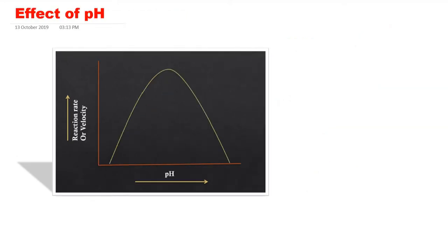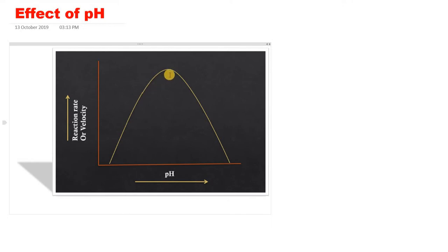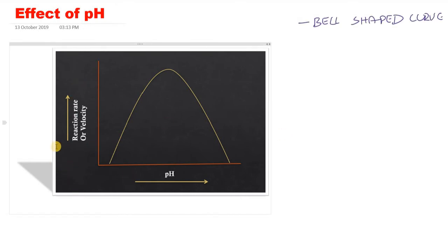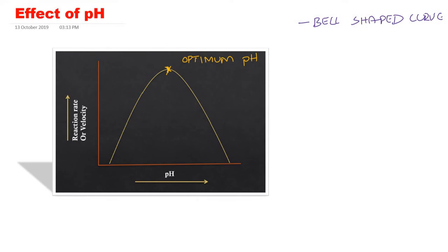Now we will see the effect of pH on enzyme activity. As the pH increases, the activity of the enzyme increases and then reaches a point where the rate of enzyme catalyzed reaction is maximum. Thereafter, if you continue to increase the pH, the rate goes on decreasing. This curve is called a bell-shaped curve. The y-axis is the rate of enzyme catalyzed reaction and the x-axis is pH. The point of maximum activity is called the optimum pH.